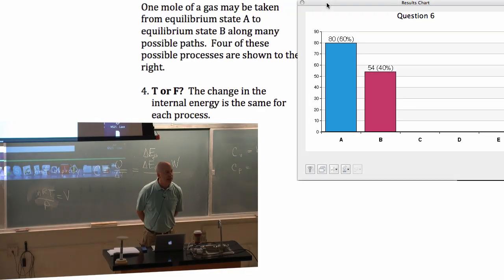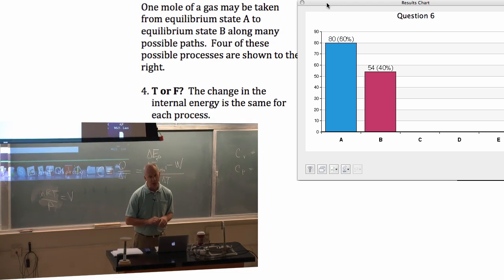So the internal energy is one of the state variables. The internal energy at state A has some value. The internal energy at state B has some value. It's a fixed value. The change in the internal energy is the internal energy at B minus the internal energy at A. Because it's a state variable, it just depends on the two states. It doesn't depend on how you got there. It doesn't depend on the path. The change in the internal energy is in fact the same for each process. So true.